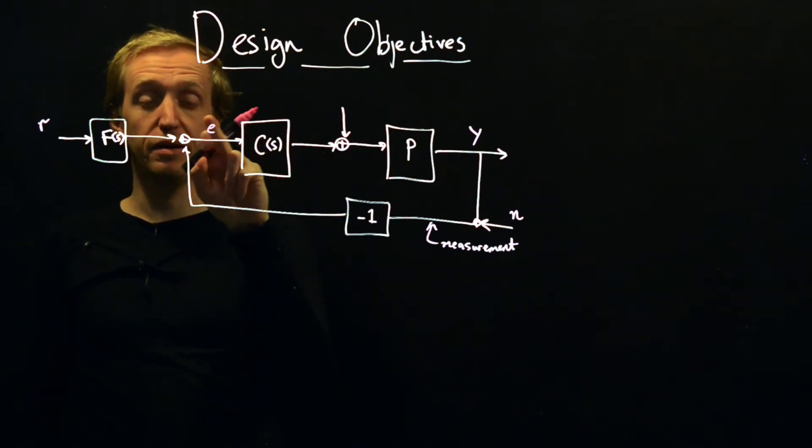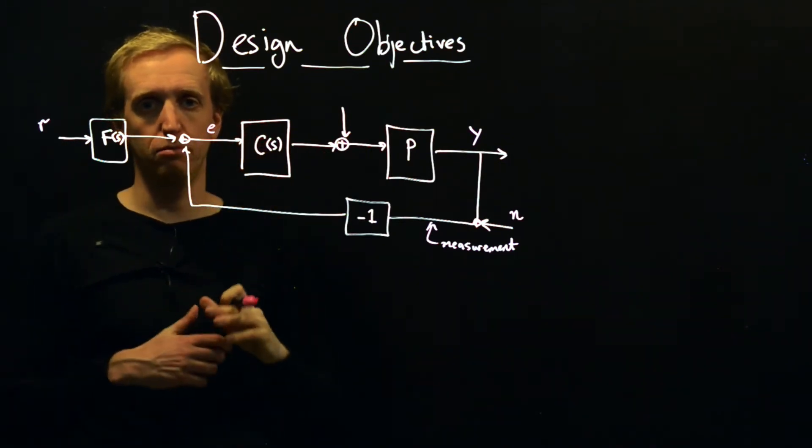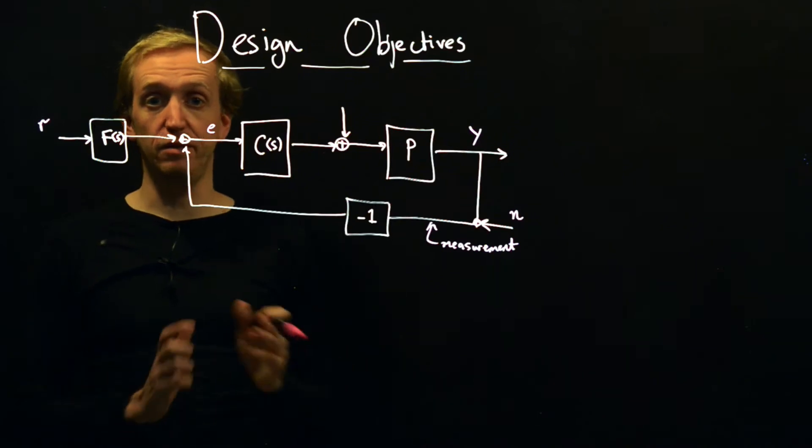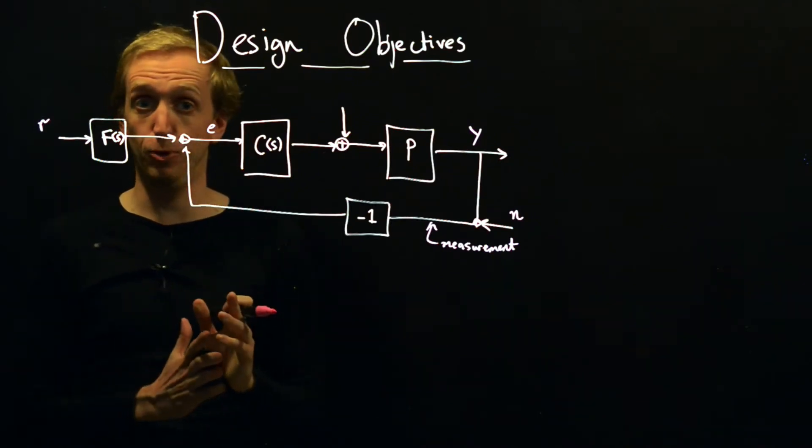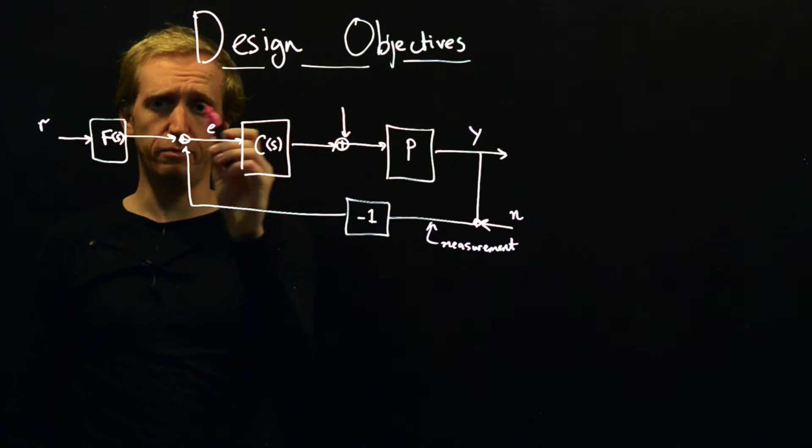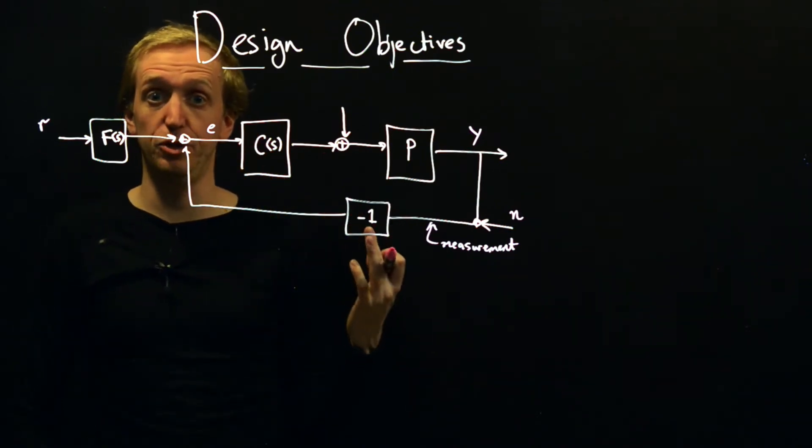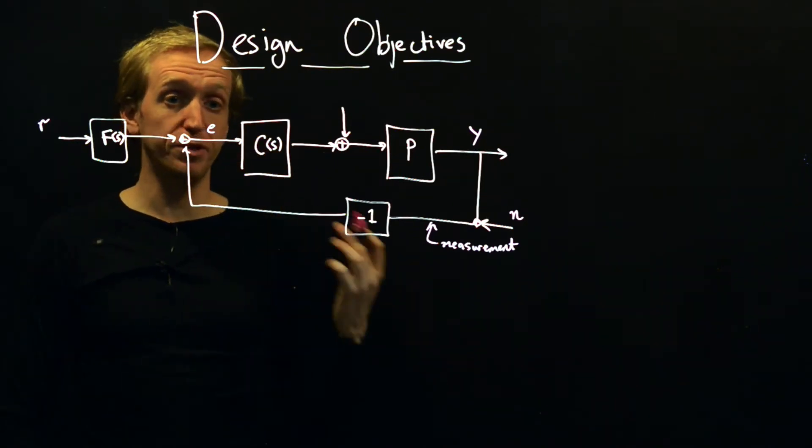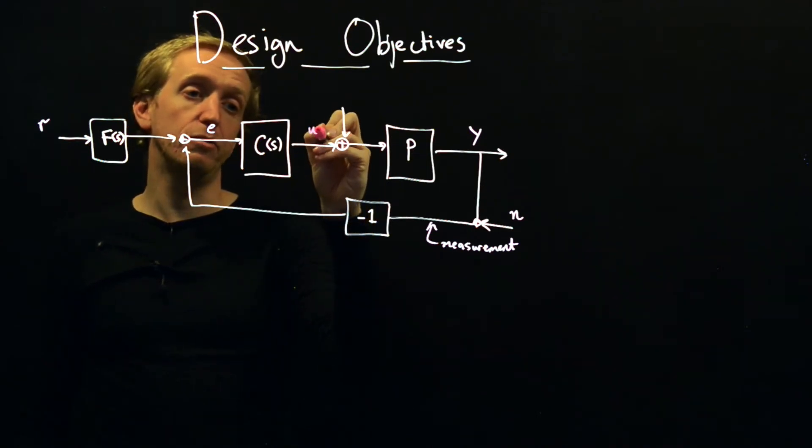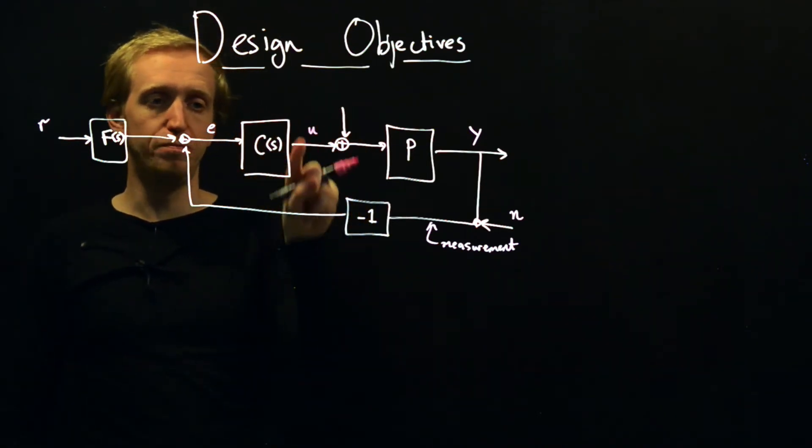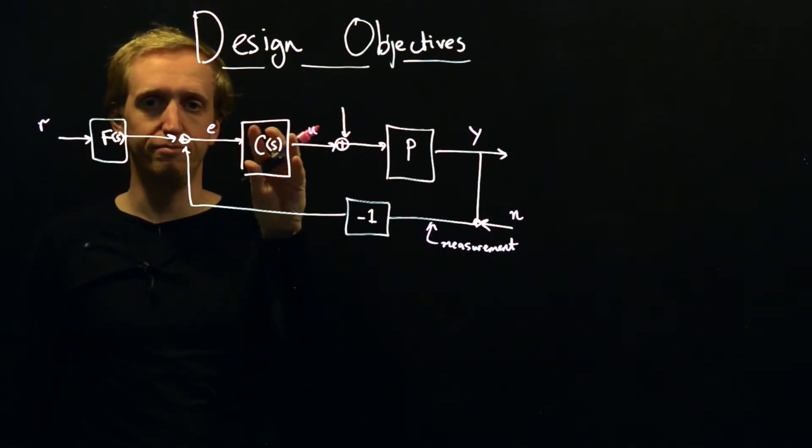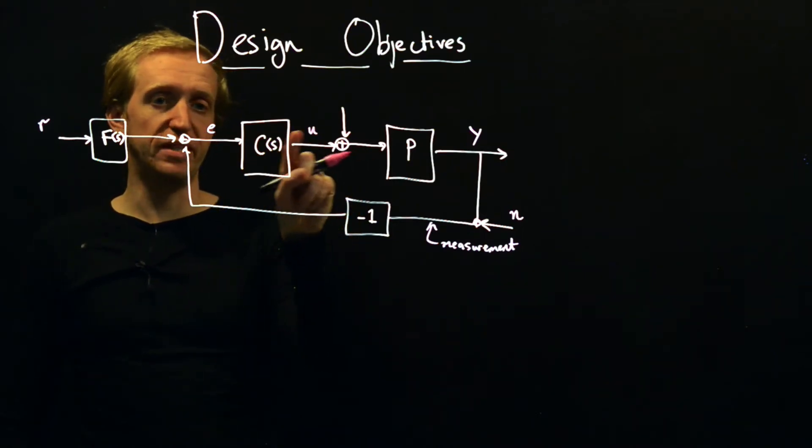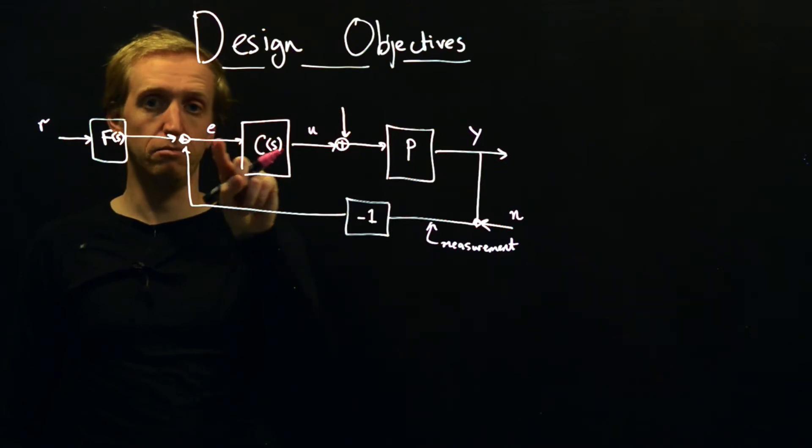What we're doing is we're comparing where we currently are to where we want to be and we're taking the difference. So that's what this minus sign is doing. And this signal in here is typically called your error signal. The idea is that it tells you how close you are to your objective. If this is big you're far from where you want to be, if this is zero you're exactly where you want to be. And this is what we're going to be using to make our control decision.